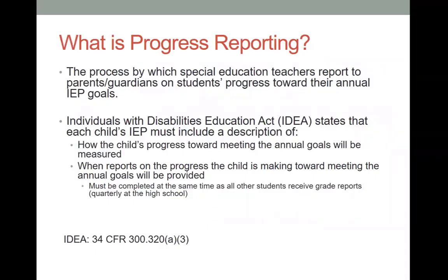So what is Progress Reporting? Progress Reporting is the process by which special ed teachers report to parents and families on their students' growth and progress toward the IEP goals. According to IDEA, we are required to include a description of how the child has progressed toward meeting their goals, how that will be measured, when the reports will be made, and how they will be provided.